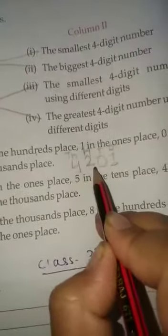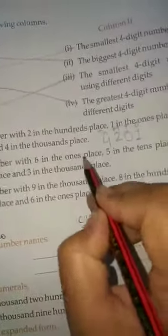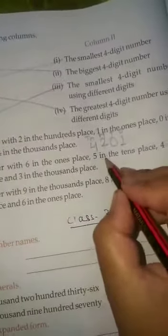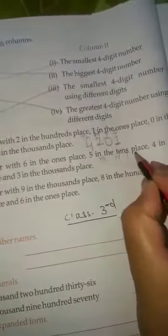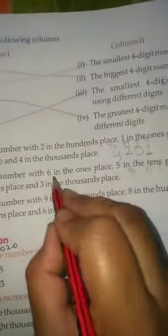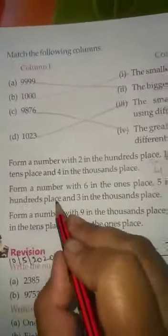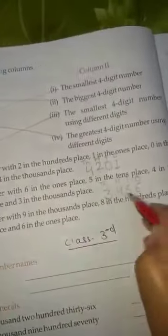Now form a digit with 6 in the ones place. We write ones, tens, hundreds, thousands. Put 6 in the ones place, 5 in the tens place, 4 in the hundreds place, and 3 in the thousands place. So the digit is 3456.